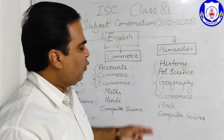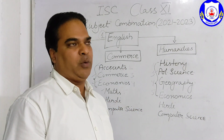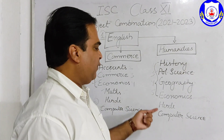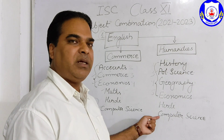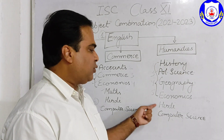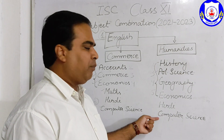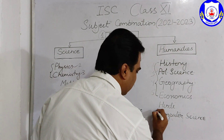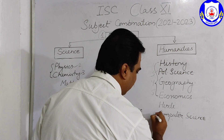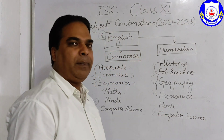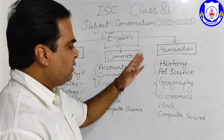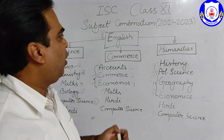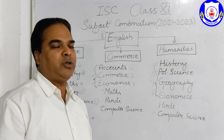If you want to choose a sixth subject in Humanities, Hindi or Computer Science is available. You can choose either Hindi or Computer Science as your sixth subject, giving you six subjects altogether. That covers the subject combinations offered in Class 11.